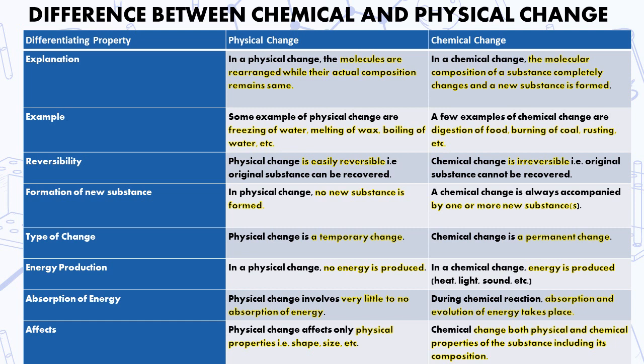Physical change is easily reversible, i.e., original substance can be recovered. Chemical change is irreversible, i.e., original substance cannot be recovered. In physical change, no new substance is formed. A chemical change is always accompanied by one or more new substances.